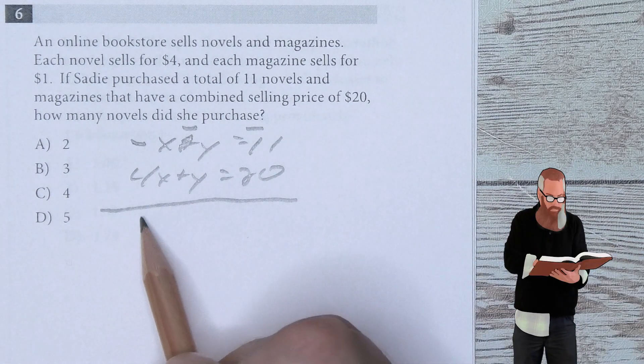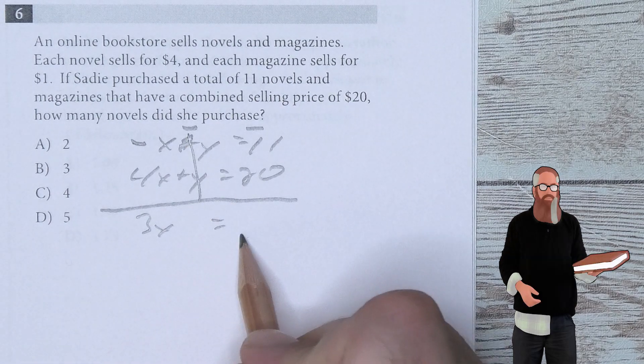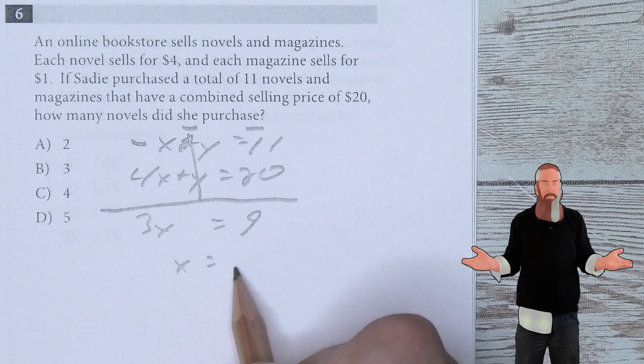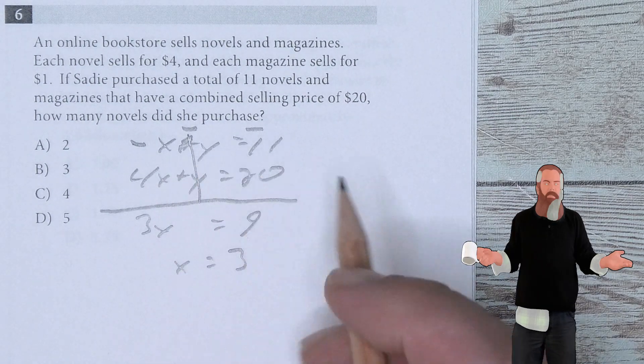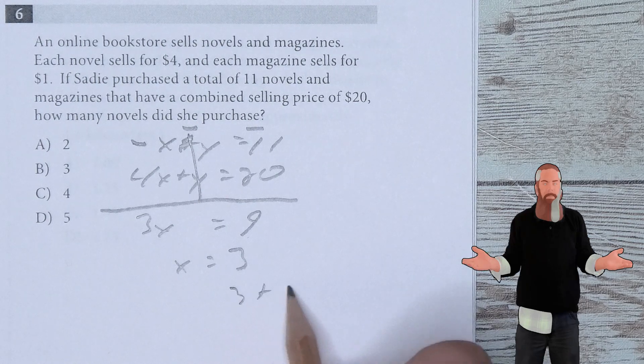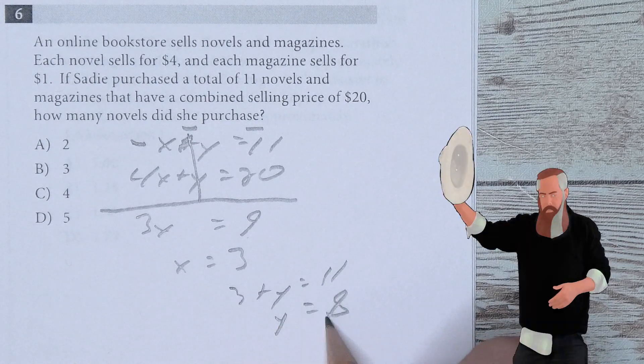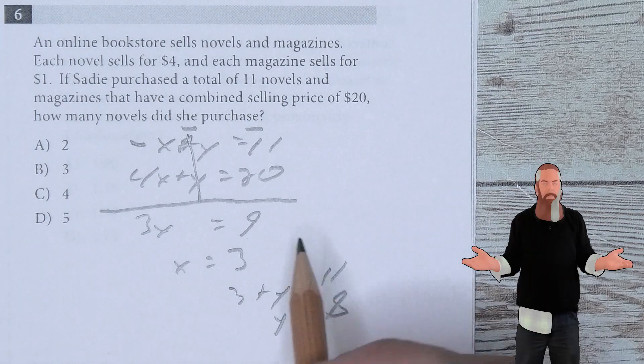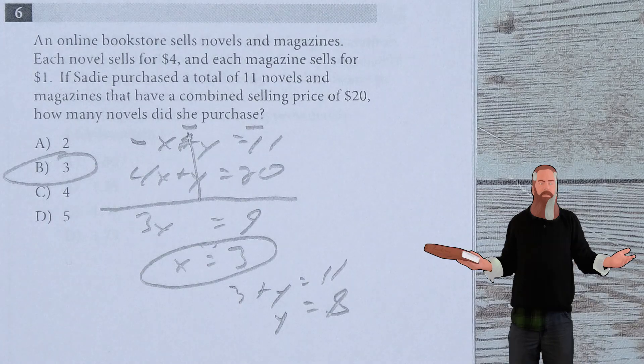I'm going to multiply this top one by negative one, changing all of the signs, meaning I get 3X, the Y's eliminate, equals 9. So X equals 3. Now I can say X plus Y equals 11, meaning 3 plus Y equals 11, or Y equals 8. But 3 was what we needed. B, 3 is the answer.